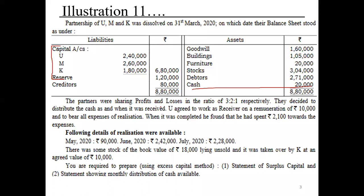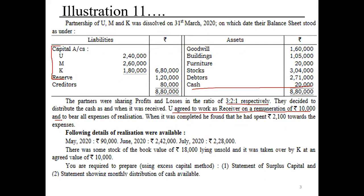On the asset side, the important information is cash of rupees 20,000. The partners were sharing profit and loss in the ratio of 3:2:1 respectively. They decided to dissolve with cash distributed as and when received. U agreed to work as a receiver on a remuneration of rupees 10,000 and to bear all the expenses of realization.